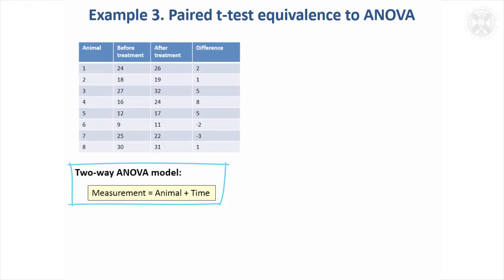It takes into account the association between two measurements. This was the example we had last time where there were eight animals that had a measurement taken before treatment and after treatment. I said you could do a paired t-test to work with these animal differences, but an alternative way of analyzing that would be simply to do a two-way ANOVA model and fit the animal effects as a factor in the model.